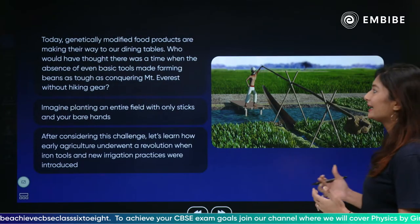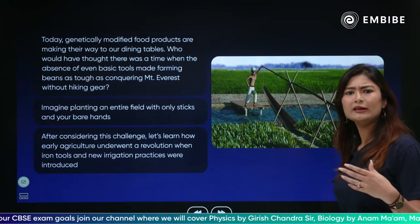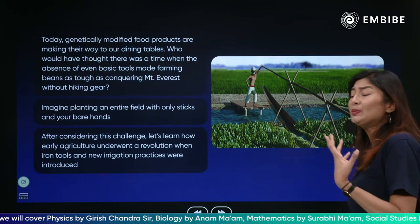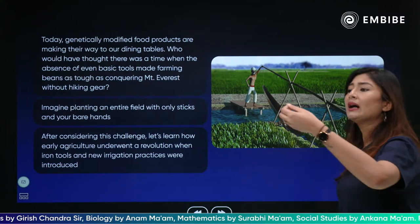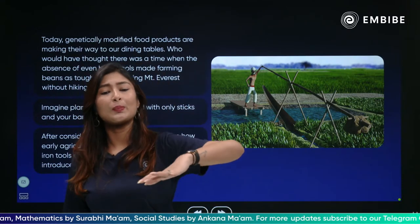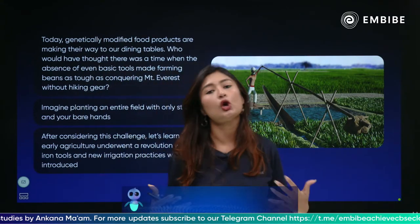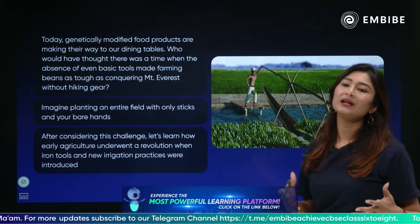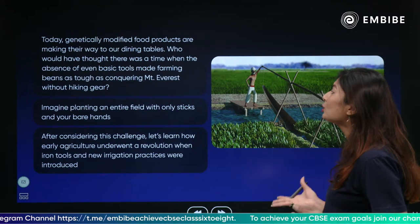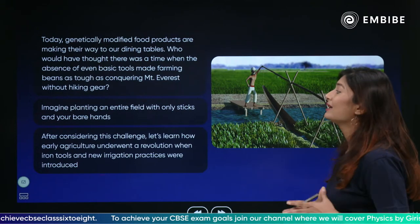Today, when we look around, genetically modified food products have made their way to our dining tables — red colored radish, bananas that when cut reveal kiwi inside. There are so many variations with hybrid food where one seed used to produce a thousand kilograms of wheat on a plot, and now with variation we can produce triple that amount. So much evolution has happened. Who would have thought there was a time when the absence of even basic tools made farming as tough as conquering Mount Everest without hiking gear?